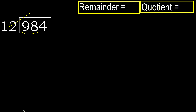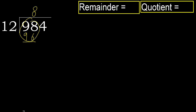Multiply 12 by which number is nearest to 98 but not greater? Multiply by 9: 108 is greater. Multiply by 8: 96 is not greater. Okay. Subtract: 98 minus 96 equals 2.